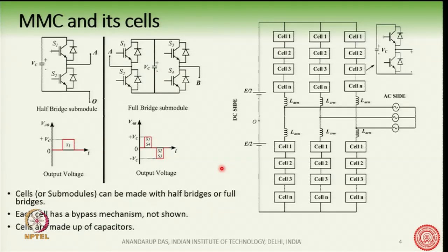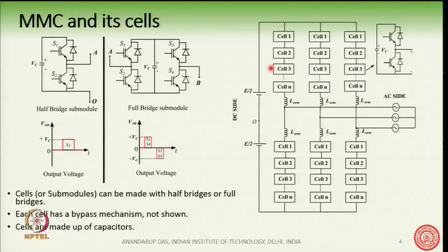Inside cell 1, cell 2, cell 3, and so on, either the half-bridge or the full-bridge is used. When to use each variety we will understand a few slides later. Taking the simpler case — the half-bridge — each cell is made up of half-bridges. There can be n number of cells, and n can be more than 100 for high-voltage DC transmission at ±400 kV.